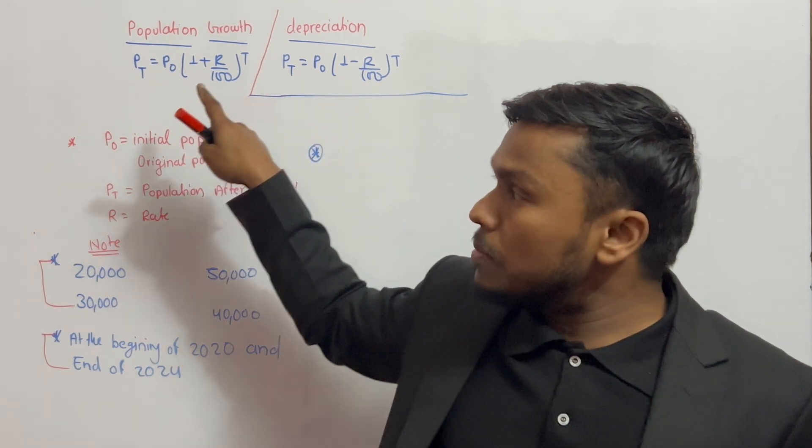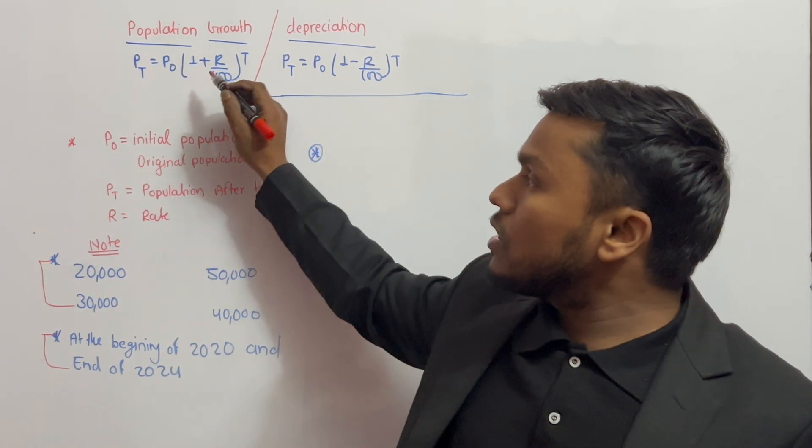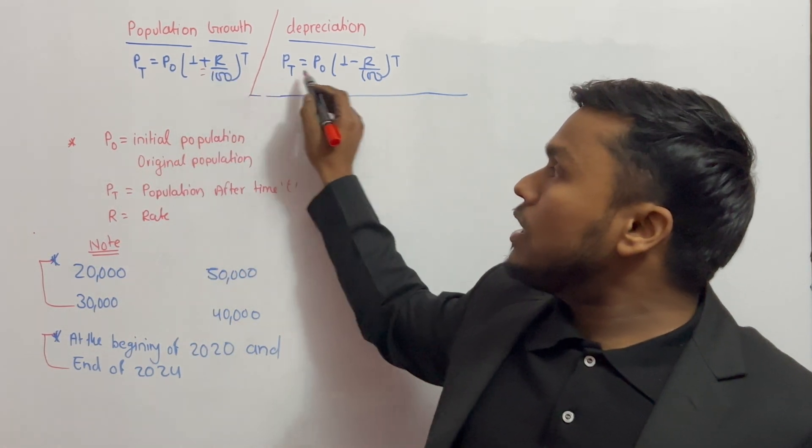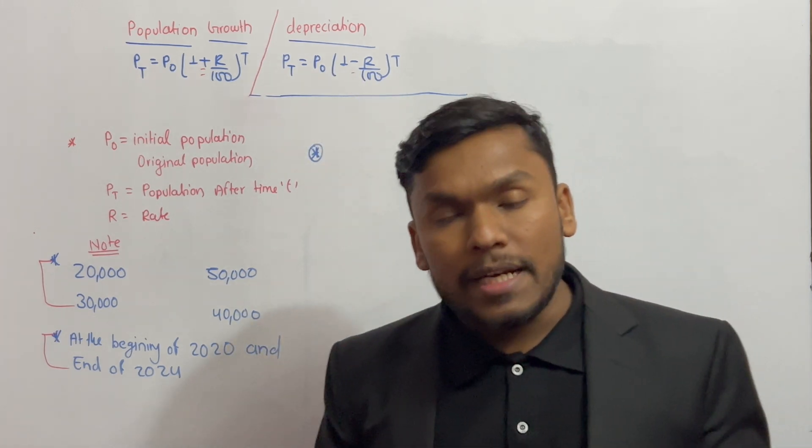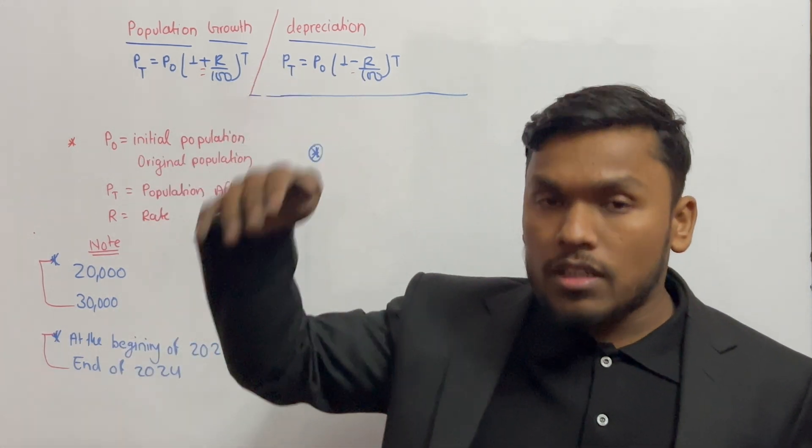So the plus formula represents growth, while the minus formula represents depreciation — meaning the value goes down.